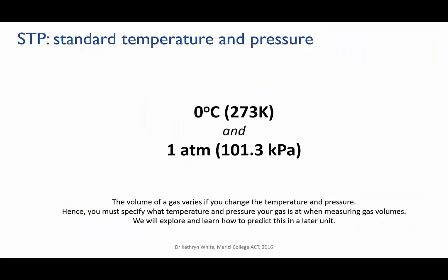The volume of a gas changes if you change its temperature or pressure, so whenever you're stating a gas volume you have to say what the temperature and the pressure were when you measured that volume. They could be anything, but scientists have defined a set of standard conditions which are useful when you're doing measurements or calculations. They're called standard temperature and pressure, or STP.